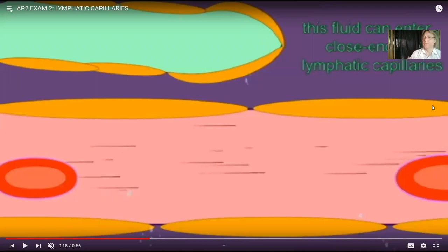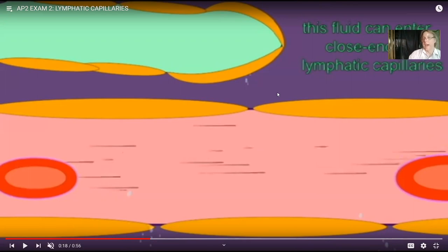A little more fluid is leaving the arterial ends than returns at the venule ends. Because these capillaries are microscopic, who cares? Well, certainly in any one instant it's not a significant amount. But by the end of the day, we're talking about a couple of liters of fluid. You have five liters of blood — you can't afford to lose three of them by the end of today. So the fluid which leaves these capillaries, we have to get it back.